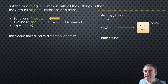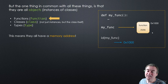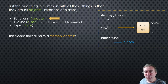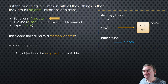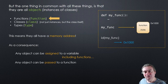We can look at the ID of my_func just like we can call ID on any other variable - my_func is just another variable, it just happens to be a function object instead of an integer object. We will get back the memory address. We're not going to be using memory addresses of functions in our code, I just want to point this out. As a consequence, any object can be assigned to a variable, including functions.